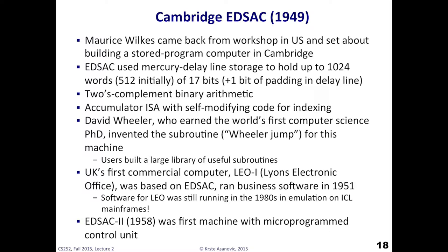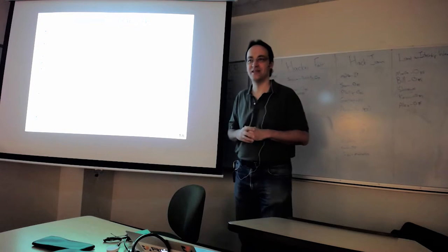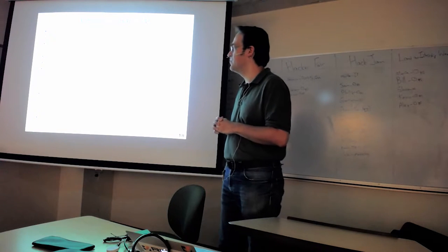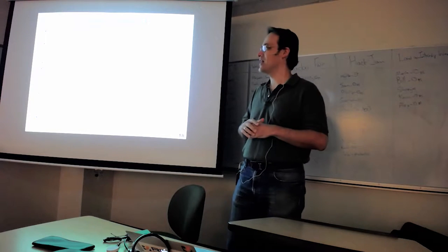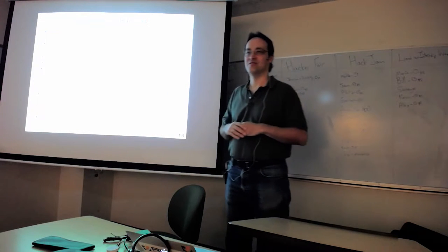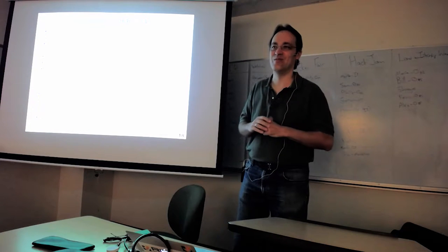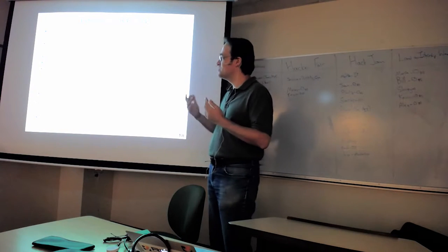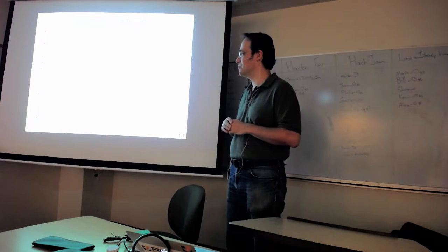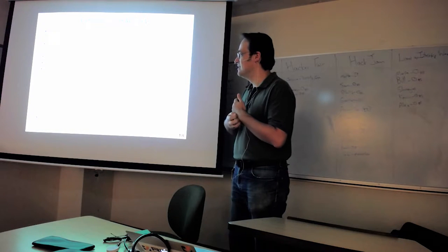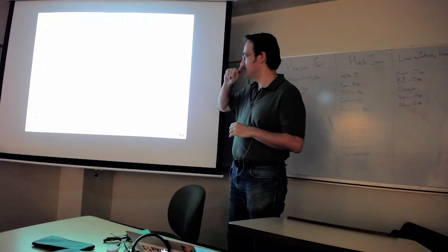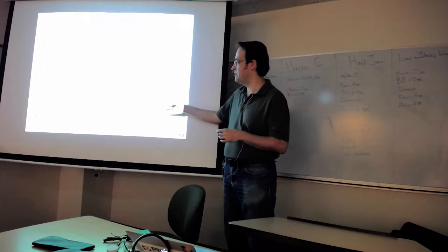So you have this pattern of pulses going down this mercury delay line, and that's your main store. Okay, so it's basically a serial access memory. You have to wait for the bits to come around again before you can pull them out of the main memory, but that was a common early main memory technology. So this had 1024 words of 17 bits, plus this one bit of padding in the delay line to separate the words from each other and to give you some framing start symbols. The machine used two's complement binary arithmetic. It was an accumulator-based ISA, and they actually used self-modifying code for indexing, which you're going to see in the problem set, how that works. So one interesting thing with this machine, now the machine's starting getting a bit bigger, the idea of store programs, people realize they're going to have to do things like subroutines. And actually, David Wheeler, he also has a distinction of earning the world's first computer science PhD. He invented the subroutine. Basically, the thing called the Wheeler jump was how he did a subroutine call.